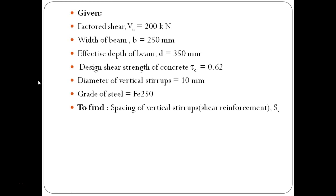So, if we look at the given parameters, factored shear force VU is 200 kN, width of the beam B equals to 250 mm, effective depth of the beam D equals to 350 mm, design shear strength of concrete tau C equals to 0.62, diameter of vertical stirrups 10 mm and grade of steel Fe250.